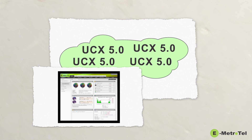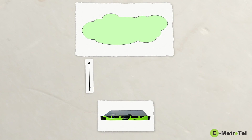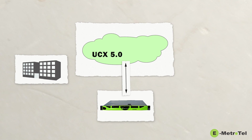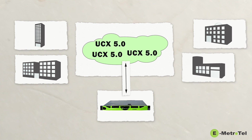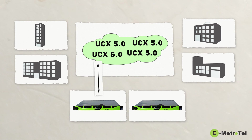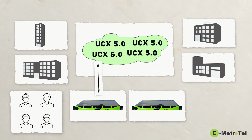No matter how many solutions you have in your cloud, no matter how large or small any of them are, they're all managed with the same browser-based tool. You create your cloud by installing a server running VMware or Hyper-V, then create a UCX instance for each location. If you grow beyond the capacity of the server, you simply add more as needed, so your expansion capabilities are virtually limitless. And every user in every facility, department, or location has access to all of the powerful features and applications of the UCX platform.